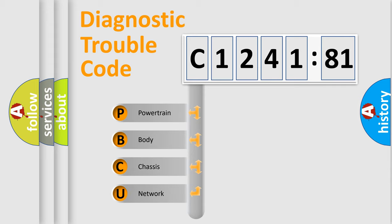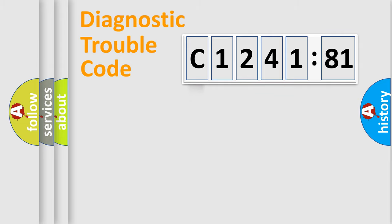If the second character is expressed as zero, it is a standardized error. In the case of numbers 1, 2, or 3, it is a more specific expression of a car-specific error.